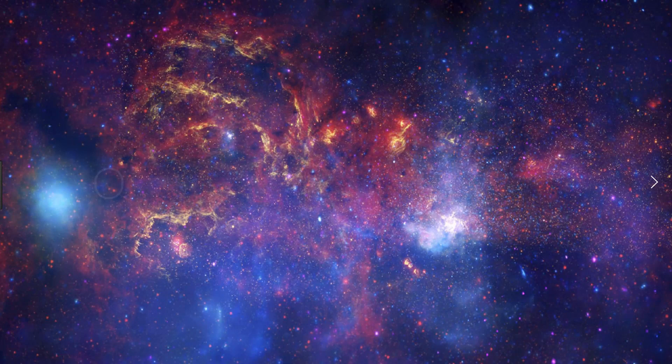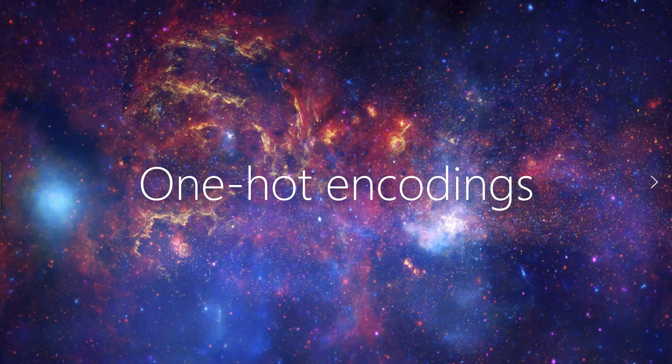In this video, we're going to discuss one-hot encodings and how we can make use of these encodings in machine learning. In a previous video, we talked about how labels for images in Keras were actually one-hot encoded vectors. Now we'll discuss exactly what that means.